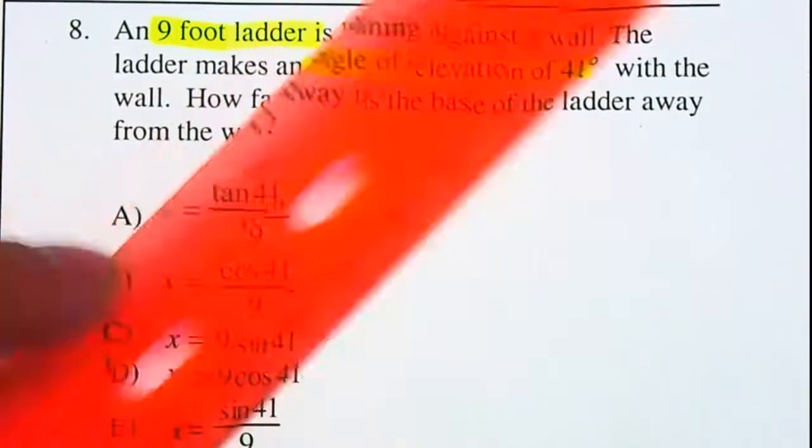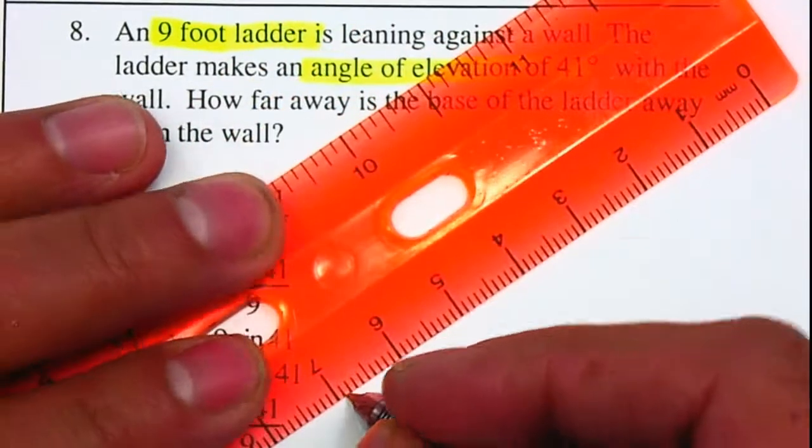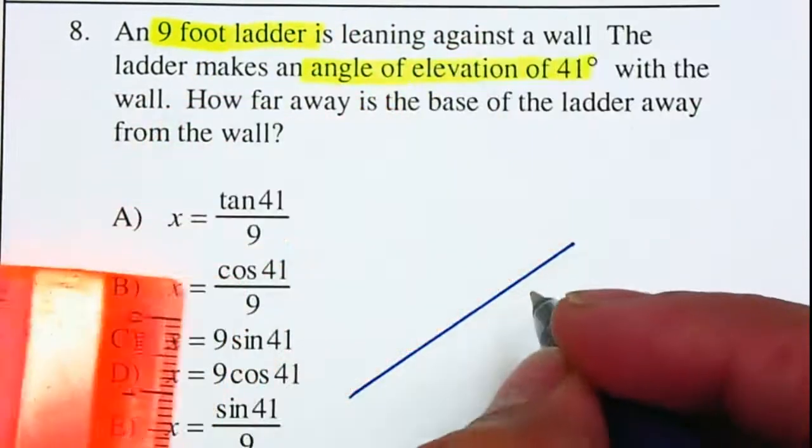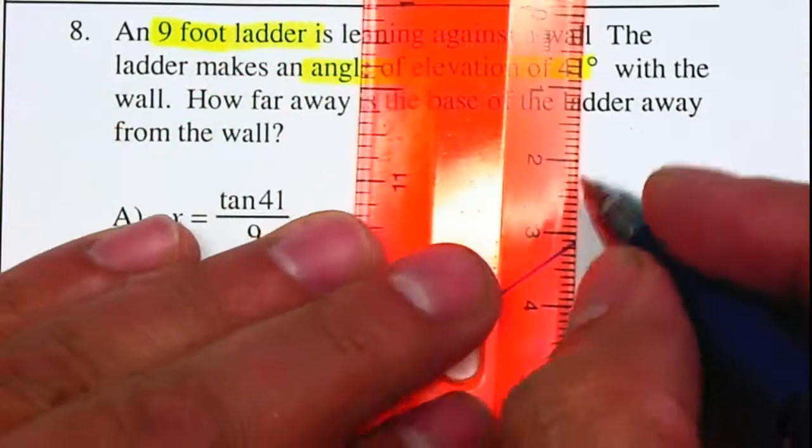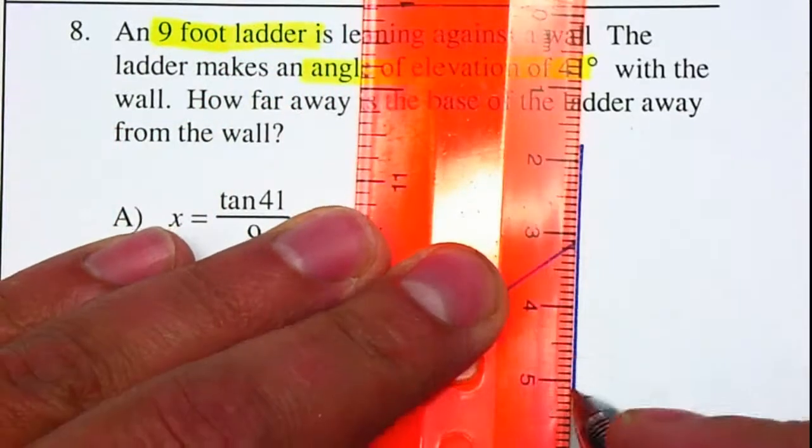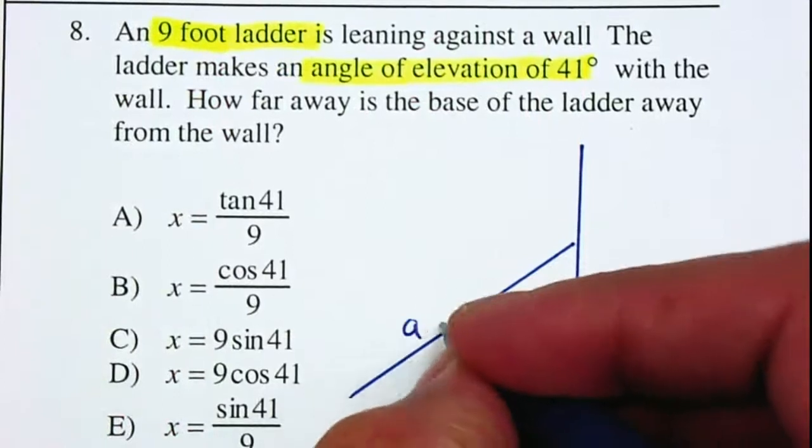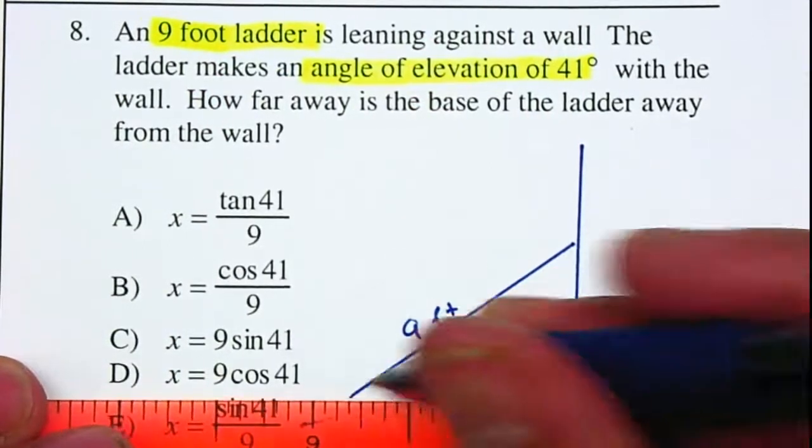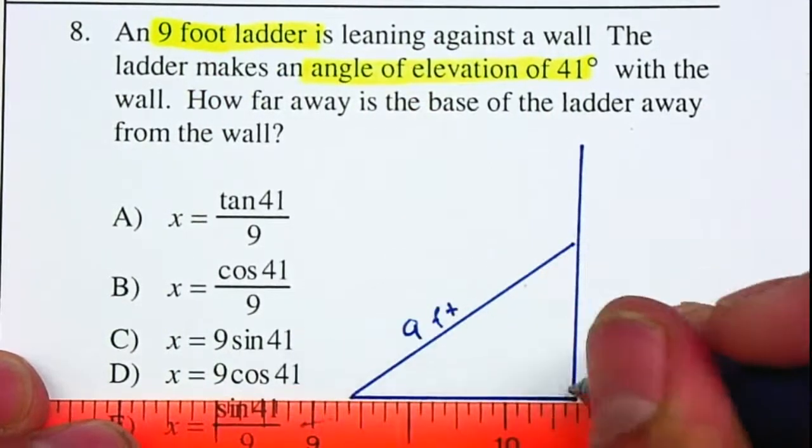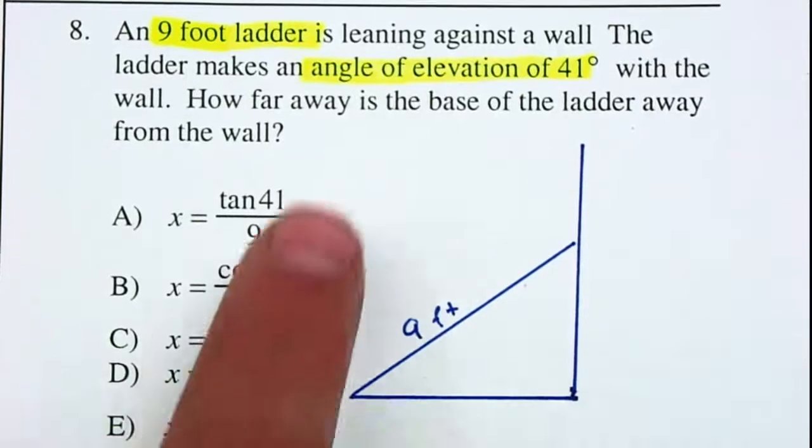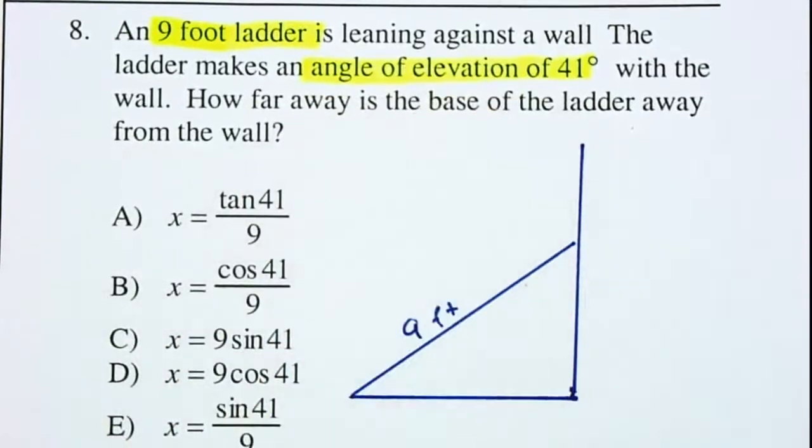So therefore we have a ladder that measures nine feet, and so this will be nine feet. Just one of the things you have to be careful is that it makes an angle of elevation of 41 degrees.